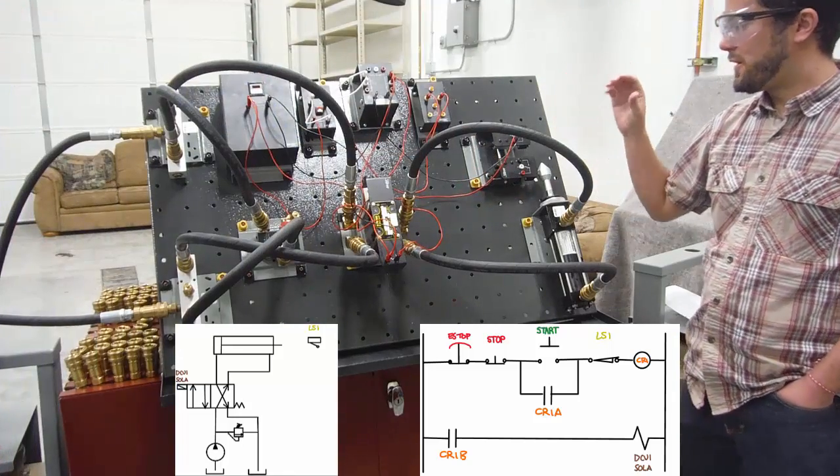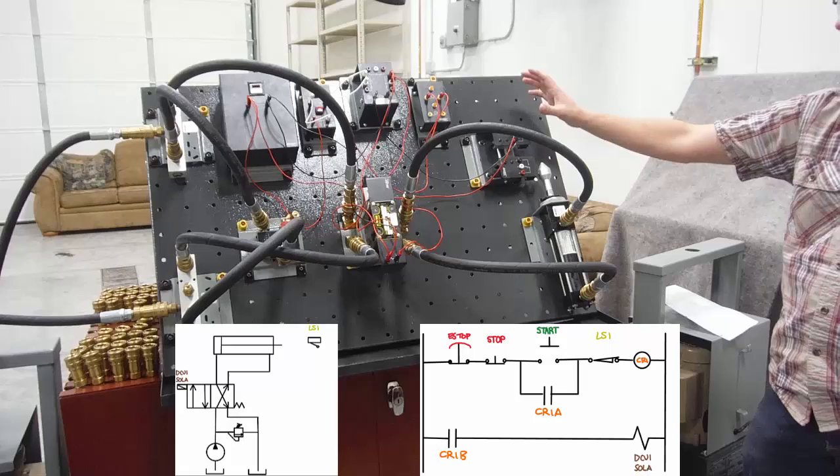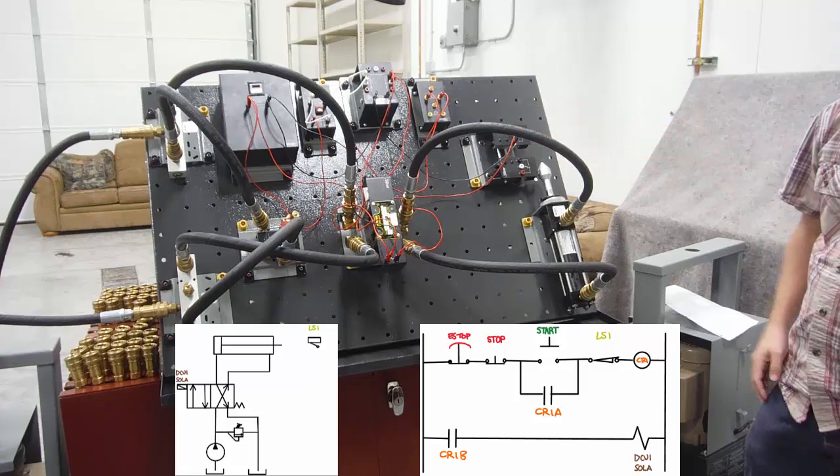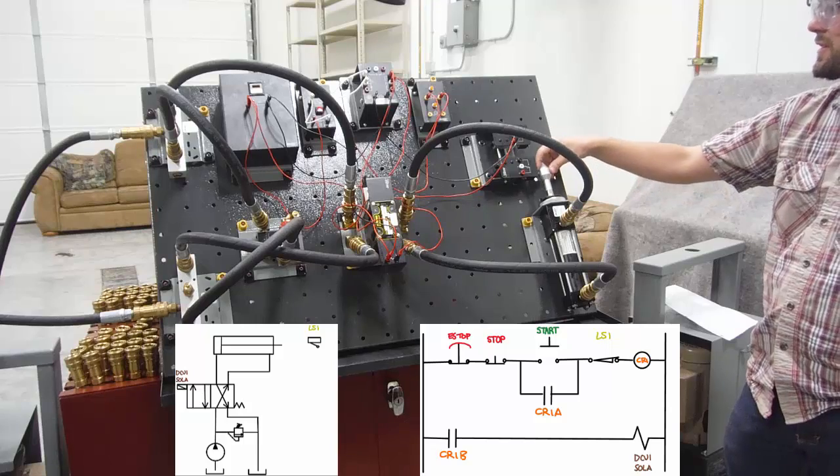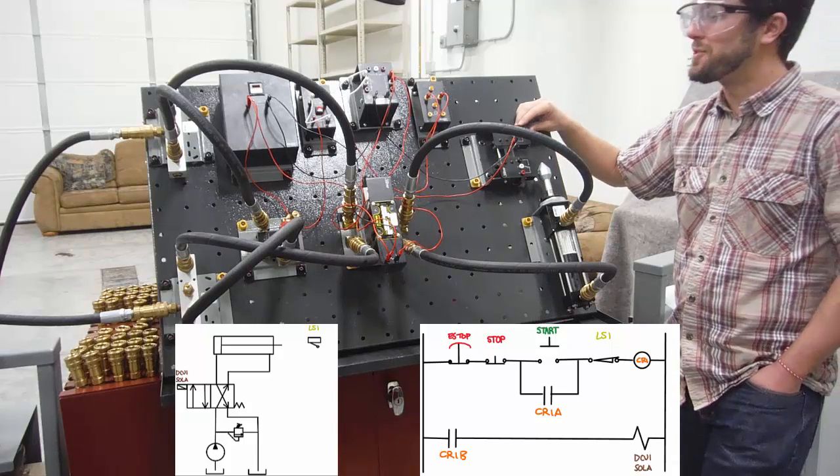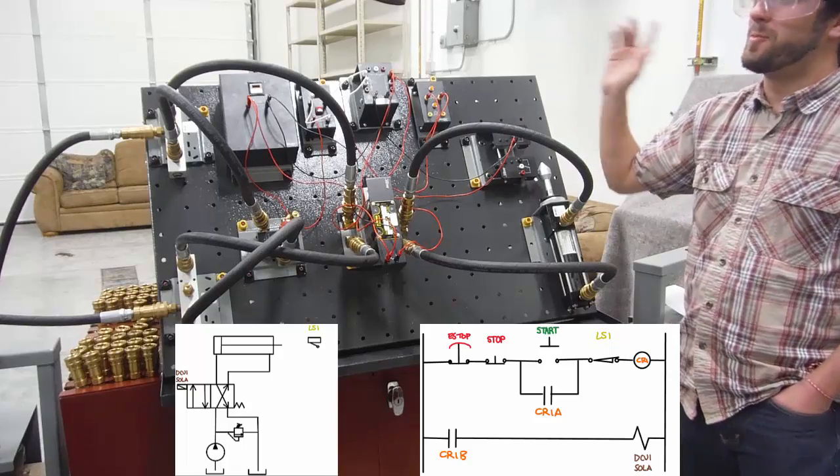And that brings us to the point where the hydraulic system actually interacts with the electronic control system. So this is a limit switch. And as this cylinder extends, it should, at the end of its range of motion, hit the limit switch, which takes us back to the beginning.